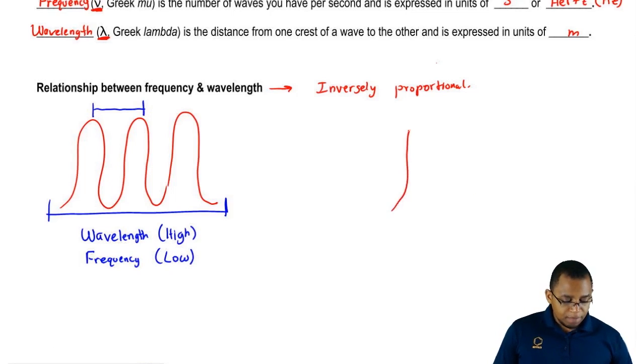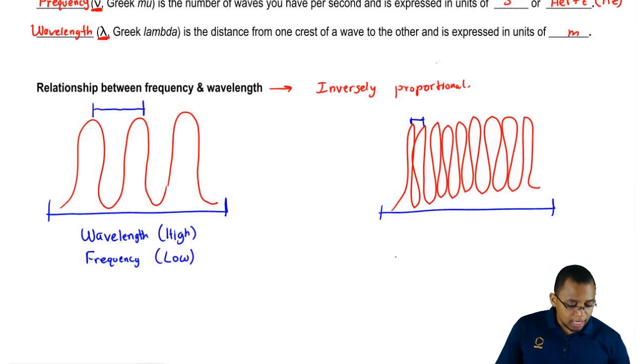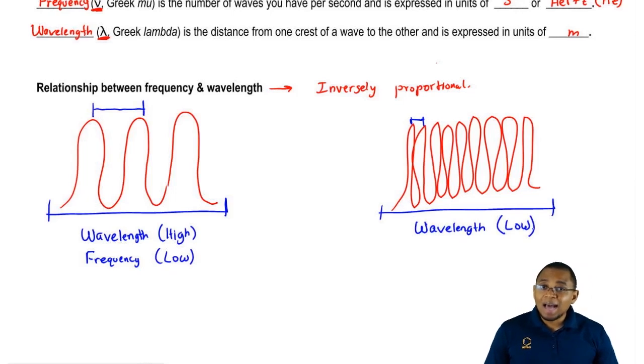Now, if we drew a different picture with roughly the same distance as the first set of waves, the distance from one top of the wave to the other - the crest - looks very small. So the wavelength would be low. And we get a lot more waves per second, so the frequency here is high.